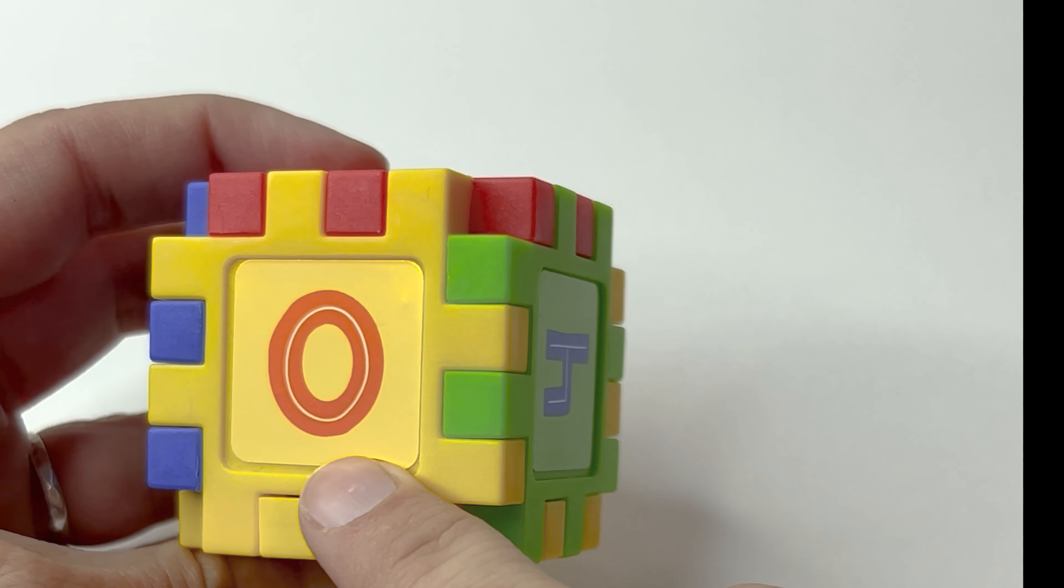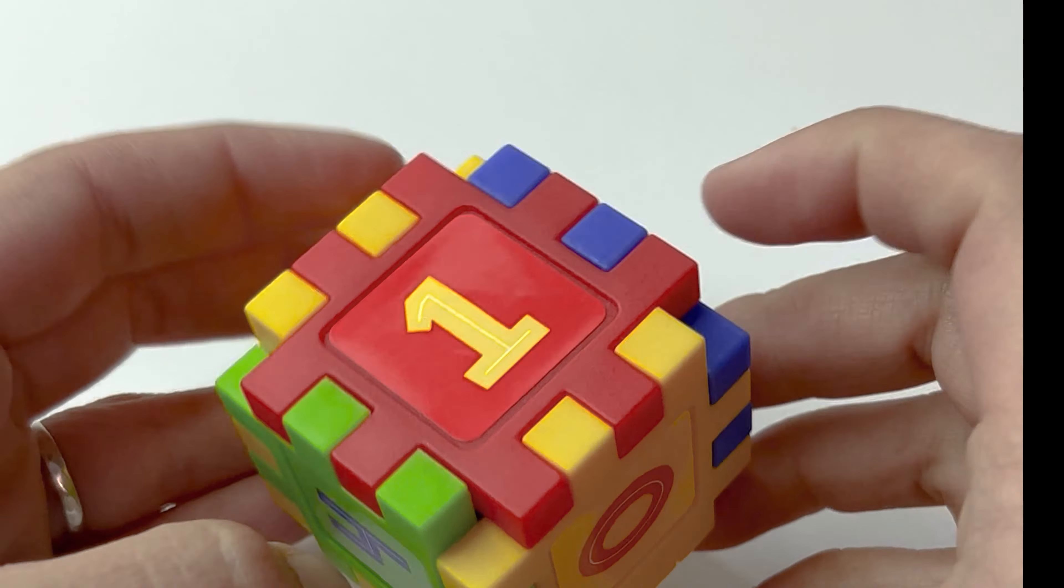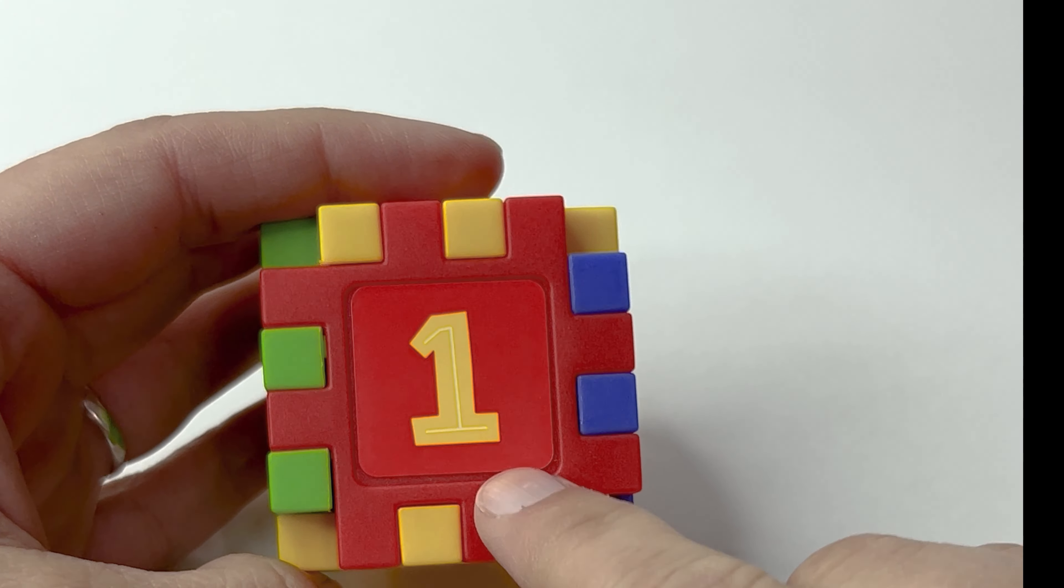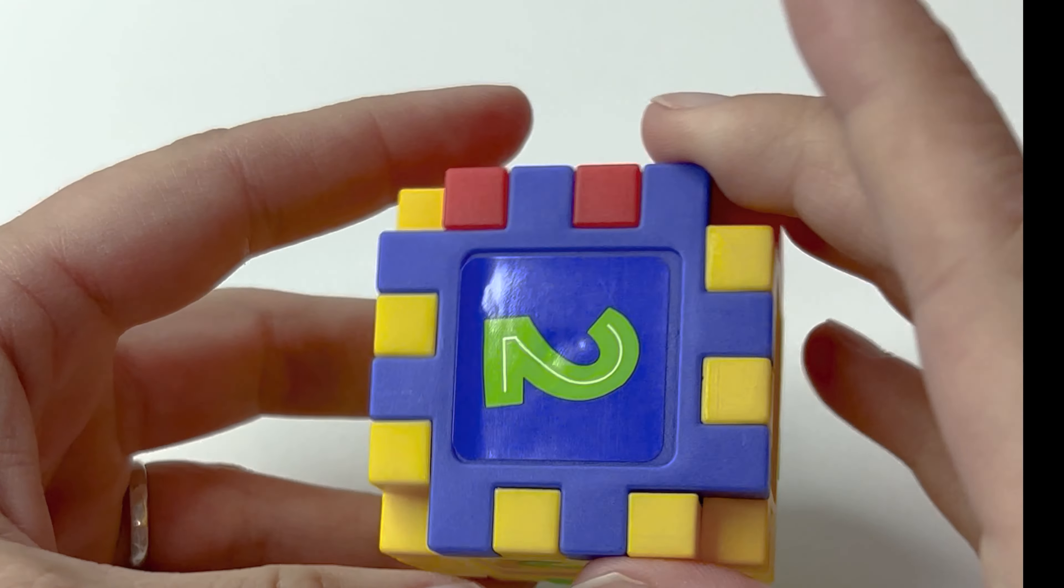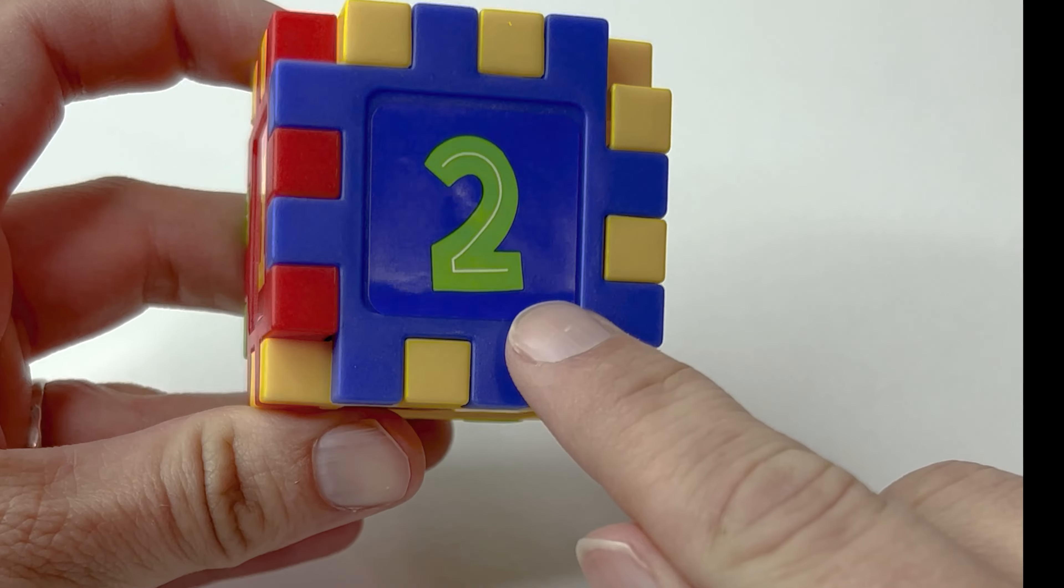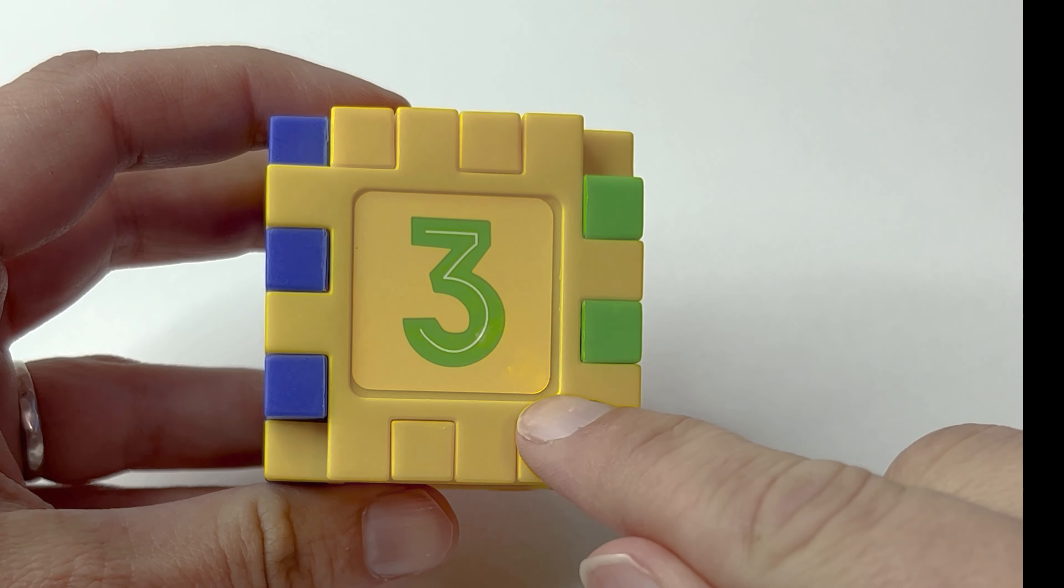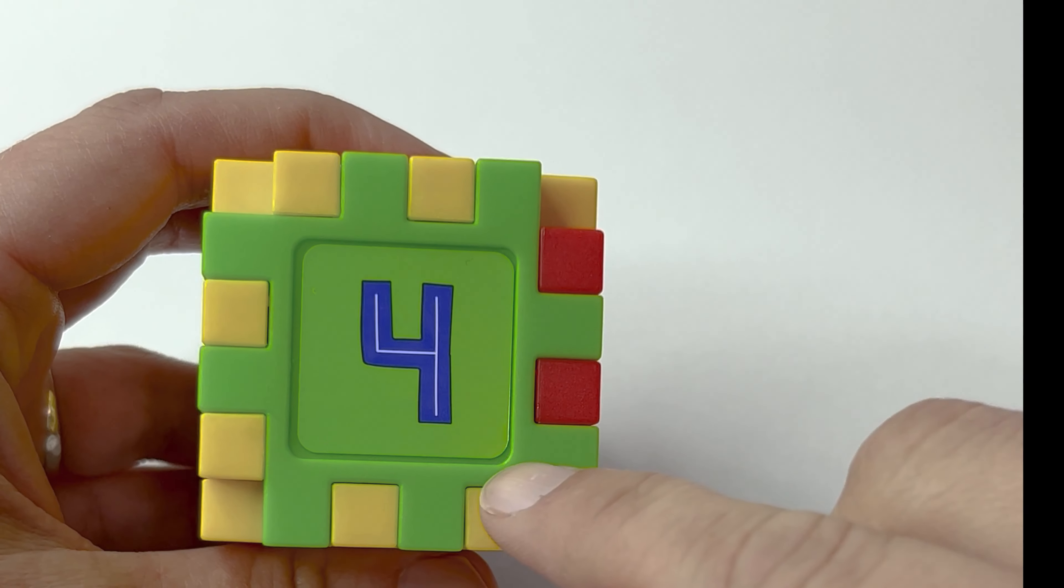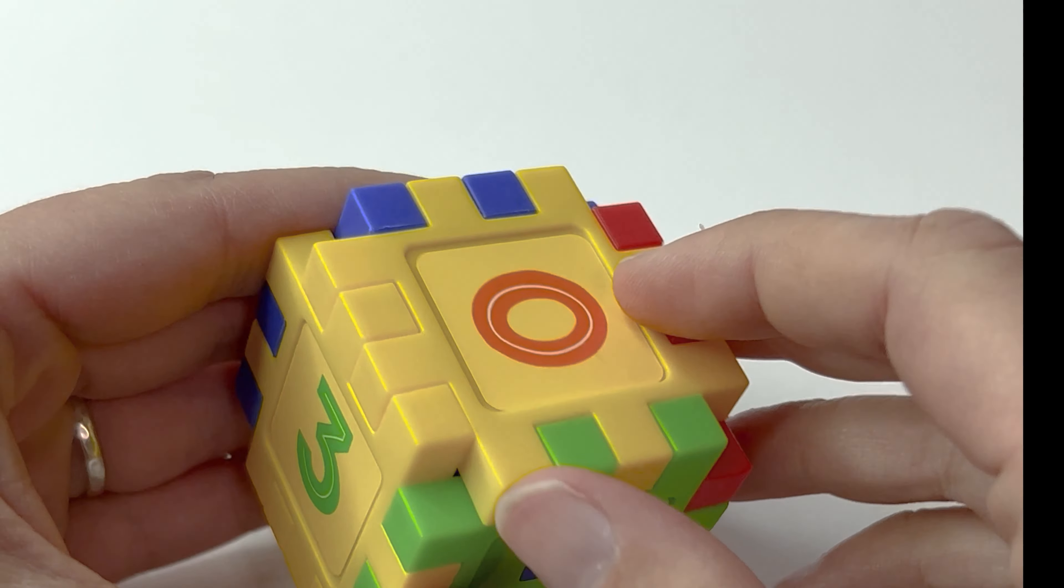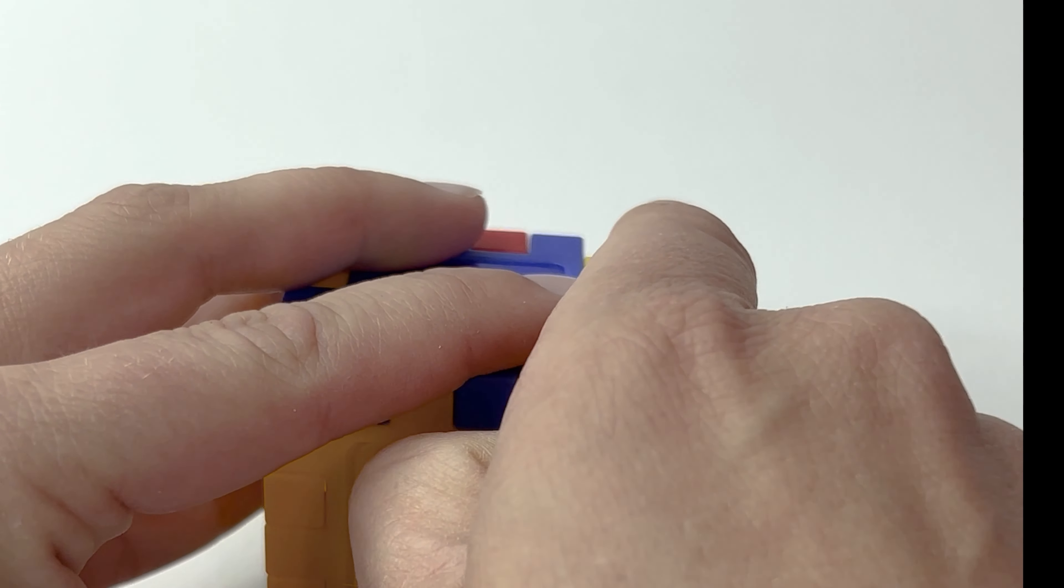We have the number zero, the number one, here's the number two, the number three, four, and let's see what's inside this cube.